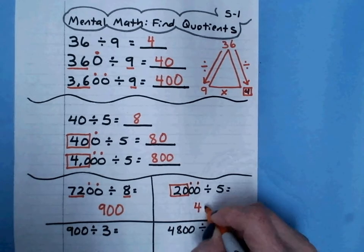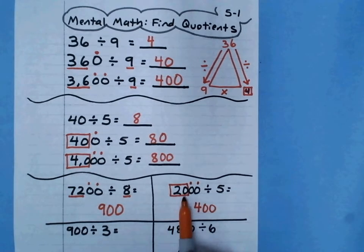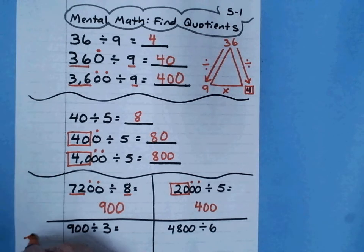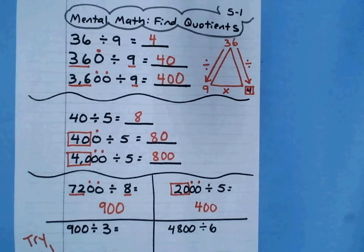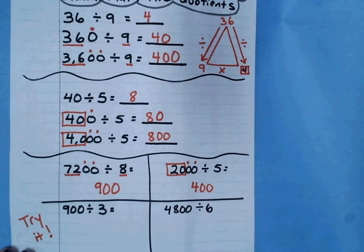And then these two 0s at the end need to be added on. Remember, you don't add in the 0 that's part of the basic fact. I want you guys to try these two examples here: 900 divided by 3 and 4,800 divided by 6. When you do those, I want you to bring them into school and show one of your teachers so that we can check them.